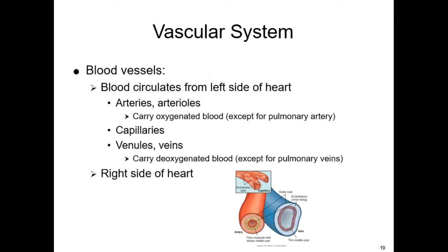Now let's take a closer look at the vascular system, including the blood vessels. Blood circulates from the left side of the heart using arteries and arterioles — except for the pulmonary artery. We have capillaries, and then venules returning to the right side of the heart. Arteries have a thick muscular and elastic middle coat, while veins tend to be thinner and a little wider — they don't have as much snap.